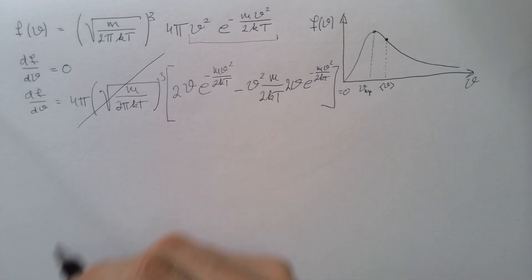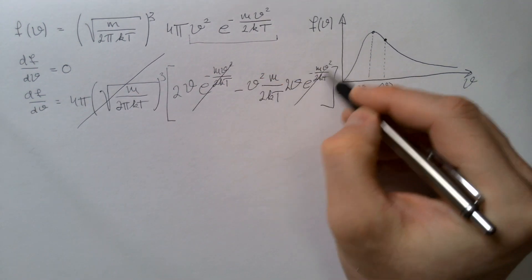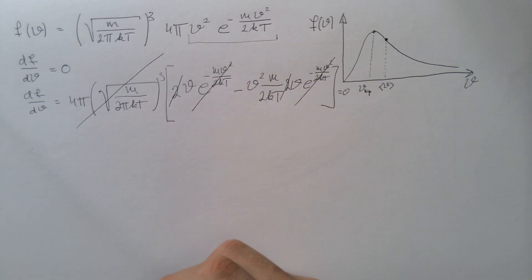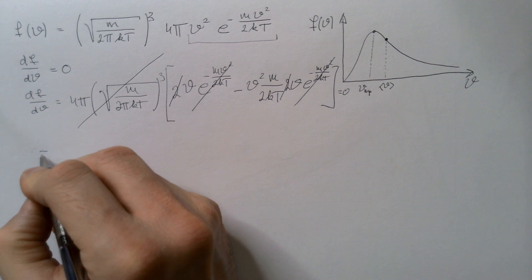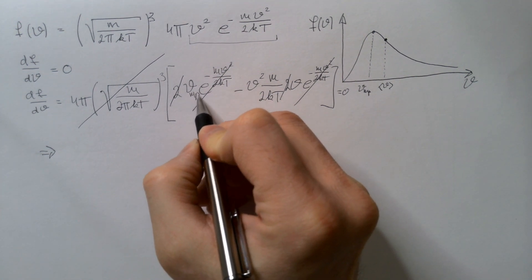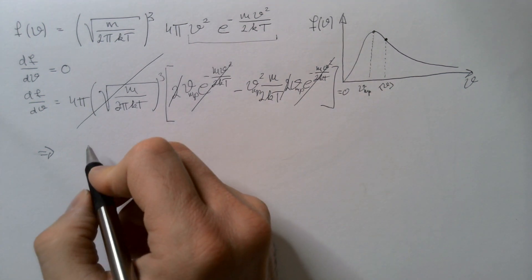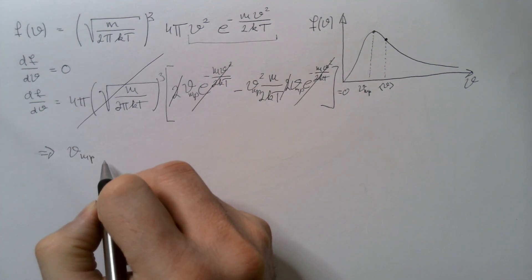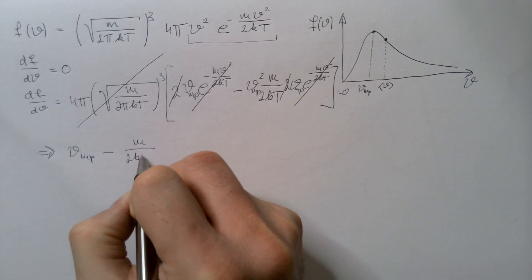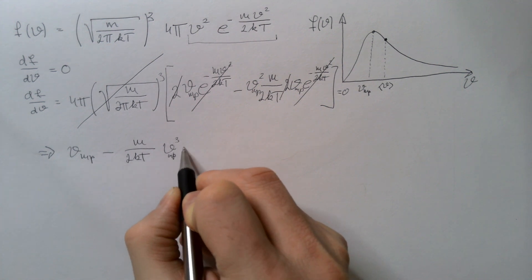And I have to set this equal to 0. That means I can right away divide by this whole constant term, and that disappears. Exponential function is never 0, so I can cancel these two. I can also cancel these two, and these two, or rather divide by 2. And notice that I will get, therefore, that I have these velocities, which immediately become my vmp, because I set it equal to 0. So, I will have this vmp minus m over 2kt, and this v squared, and this will give me vmp cubed, and that is equal to 0.